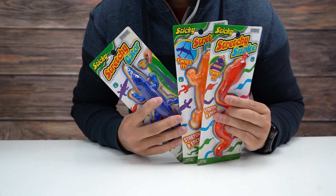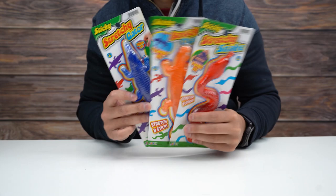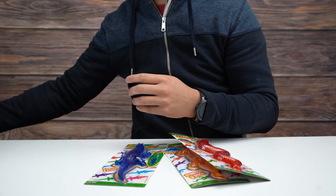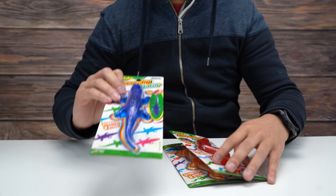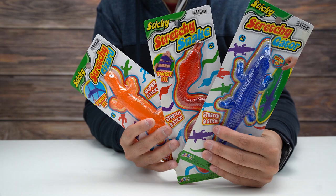All right guys, today we're checking out these sticky stretchy animals. They come in three different styles: alligators, snakes, and lizards. They also come in a variety of different colors. For example, I have an orange lizard and a green alligator. I'll show you guys the blue alligator, a red snake, and the orange lizard.